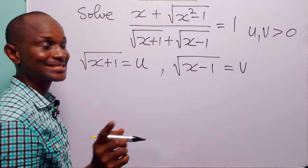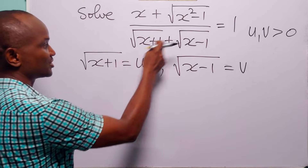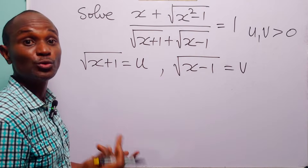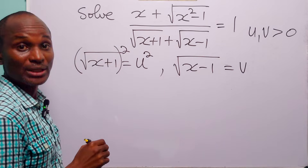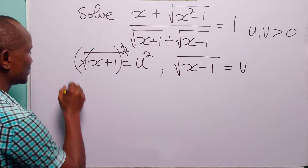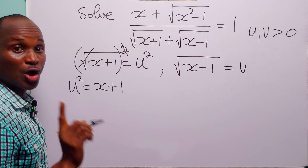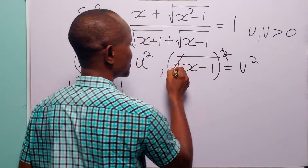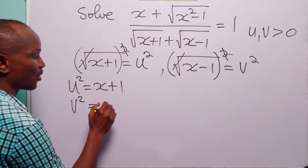Now let us rewrite the original equation in terms of u and v. We already have that this is u and this is v, so let us find x and the other expressions in terms of u and v. When we square both sides of the u equation, that takes care of the square root, and we have that u squared is equal to x plus 1.